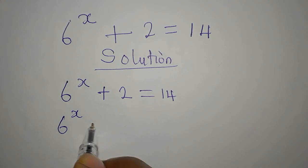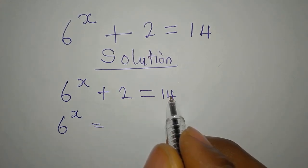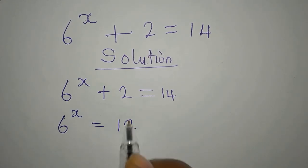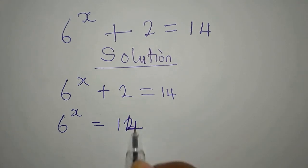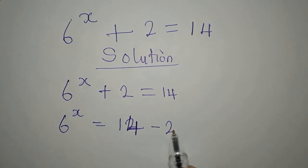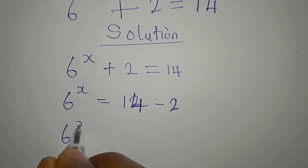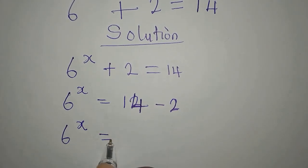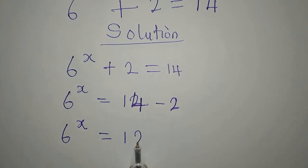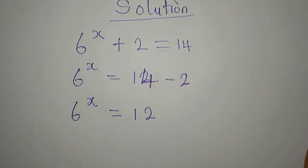So we have 6 to the power of x equals 14. This is 14 minus 2. Let me show all the steps. From here, 6 to the power of x is equal to 12.